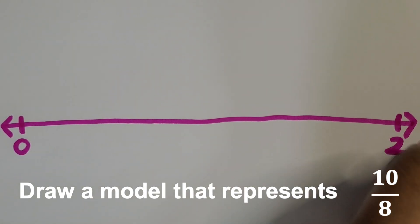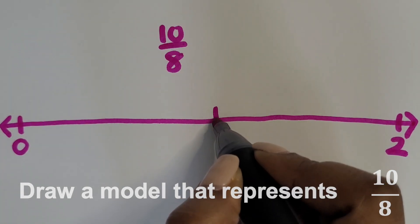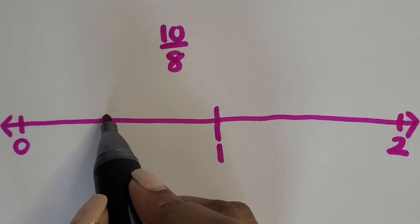So zero is the first endpoint, two is the second endpoint, and then in the middle instead of it being a half, it's going to be one hole.